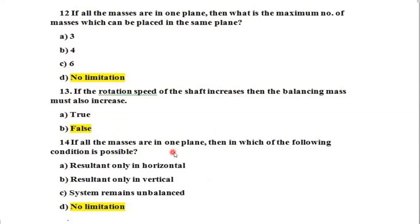Question 14: If all masses are in one plane, which condition is possible? While balancing in one plane there is no restriction on placing masses. The net result only depends on the vector sum of vertical and horizontal components, and the resultant should equal the unbalanced force. There are no limitations.